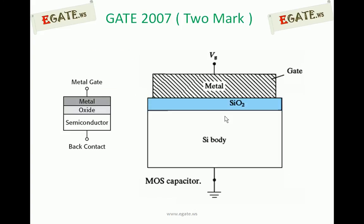A simple MOS capacitor is formed using metal, oxide, and semiconductor — the abbreviation MOS stands for metal-oxide-semiconductor. The metal acts as the gate terminal. The oxide is the silicon dioxide layer which separates the gate and substrate. The substrate is the semiconductor, which can be either N-type or P-type. Depending on the voltage applied across the gate, the MOS capacitor may be in different regions: accumulation, depletion, and inversion.